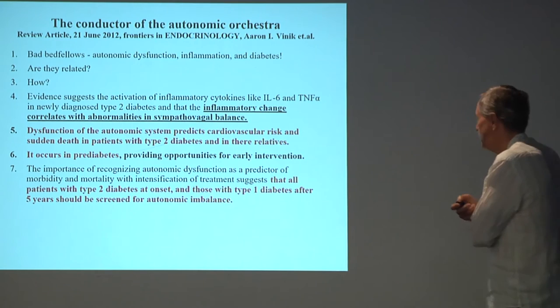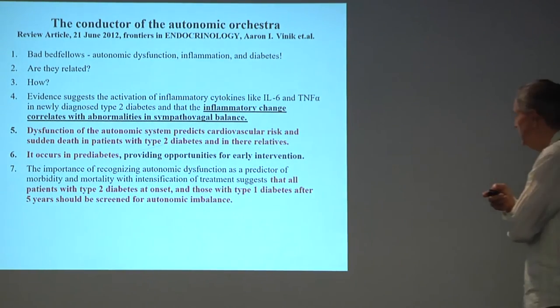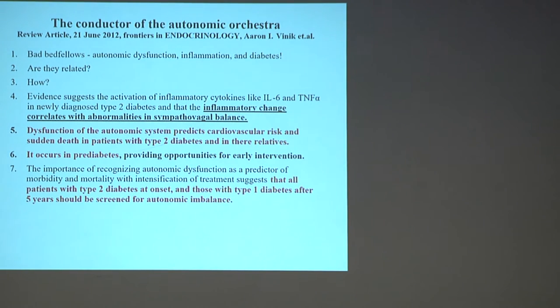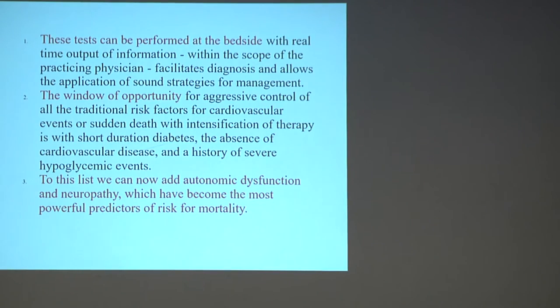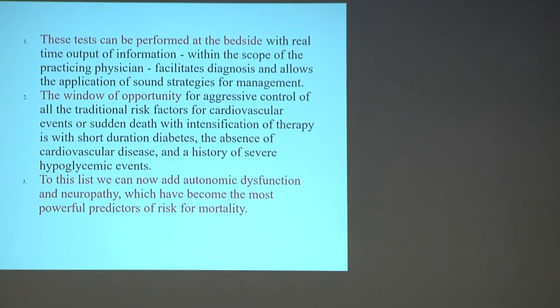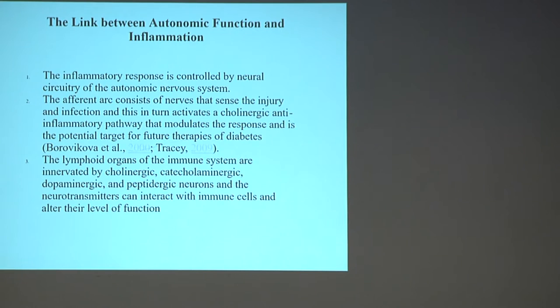Dysfunction in the autonomic nervous system predicts cardiovascular risk and sudden death in type 2 diabetes and in their relatives. It occurs in pre-diabetes just as insulin levels start to increase before we see diabetes. Sympathovagal imbalance appears clinically before diabetes and is one of the best predictors of onset of type 2 diabetes. The presence of peripheral neuropathy is a powerful predictor of mortality, probably because it's related to autonomic dysfunction and is symptomatic of sympathovagal imbalance.